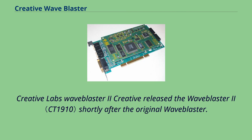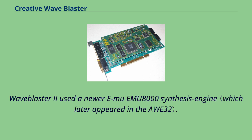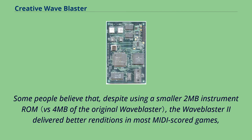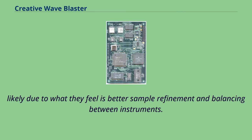Creative released the WaveBlaster 2 shortly after the original WaveBlaster. WaveBlaster 2 used a newer EMU-8000 synthesis engine. Some people believe that, despite using a smaller 2MB instrument ROM, the WaveBlaster 2 delivered better renditions in most MIDI scored games, likely due to what they feel is better sample refinement and balancing between instruments.